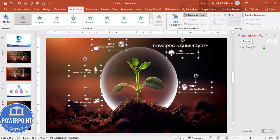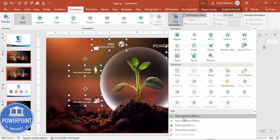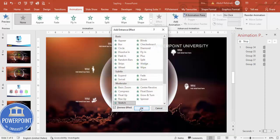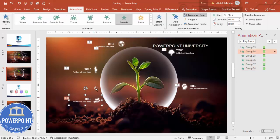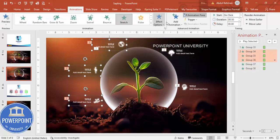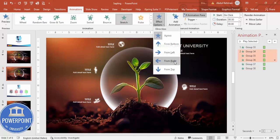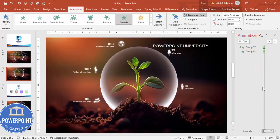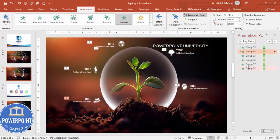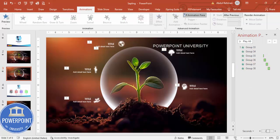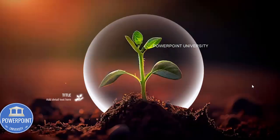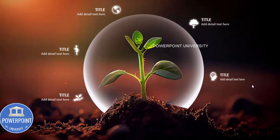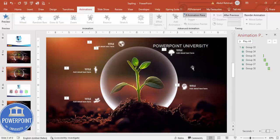Select the remaining elements using Shift, then go to Add Animation, More Entrance Effects, and click Stretch. Set the stretch direction — from right for some elements, from left for others. Make sure all animations are set to After Previous. When played, the animation comes together like this — a simple animation effect.